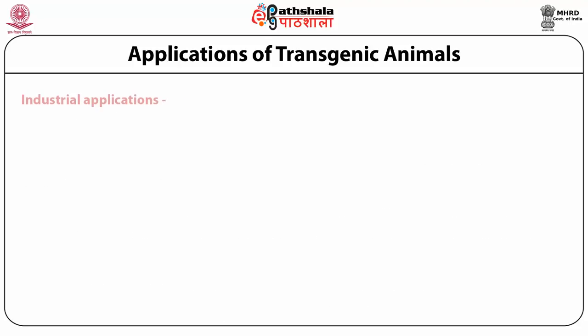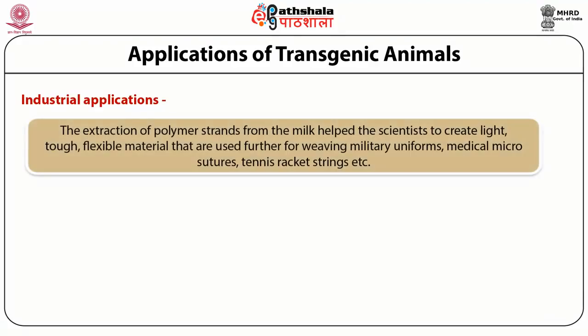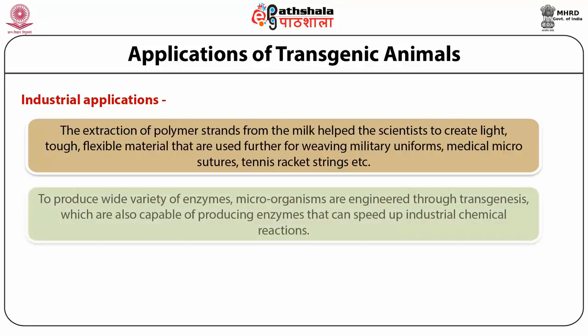In the industrial field, extraction of polymer proteins from milk helps scientists create light, tough, flexible materials used for weaving military uniforms, medical microstructures, tennis rackets and strings. A second industrial application is production of a wide variety of enzymes; microorganisms engineered through transgenics are capable of producing enzymes that can speed up industrial chemical reactions.